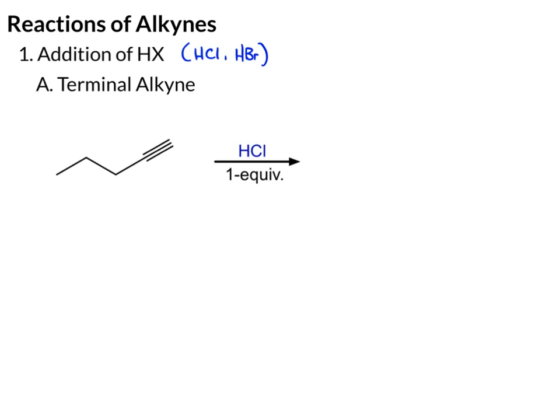We're going to start by looking at how HCl reacts with a terminal alkyne, and I've specified here one equivalent. What that means is if I use one mole of this alkyne, I'm going to use an equal ratio — one mole of HCl. This is going to follow Markovnikov's addition and give us Markovnikov's selectivity.